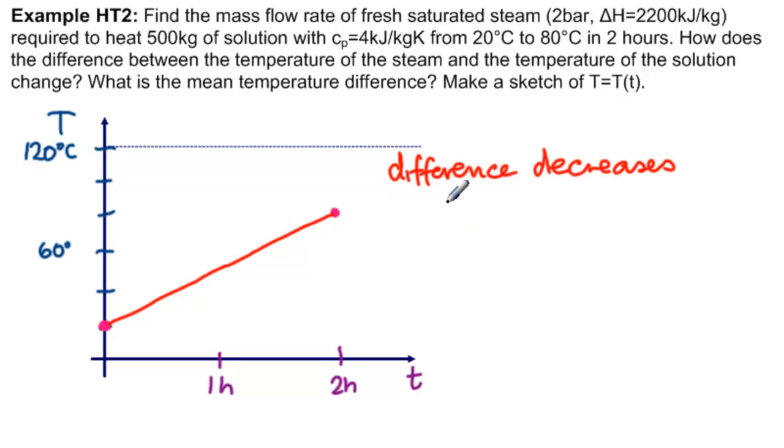Delta T1 is equal to 120 degrees minus 20 degrees equals 100 degrees Celsius. Delta T2 at the end is 120 degrees minus 80 degrees equals 40 degrees Celsius.